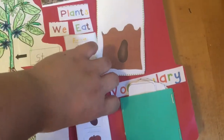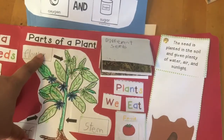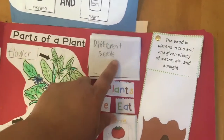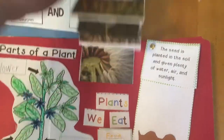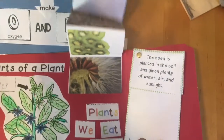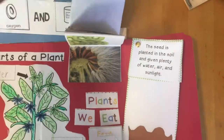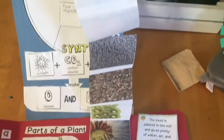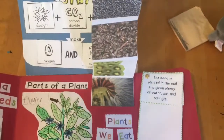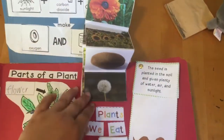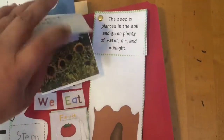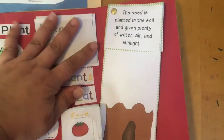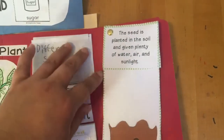This is parts of a plant, and different seeds here — it folds out this way. Those are the seeds and what they are. And then there's a little booklet of how seeds grow here.